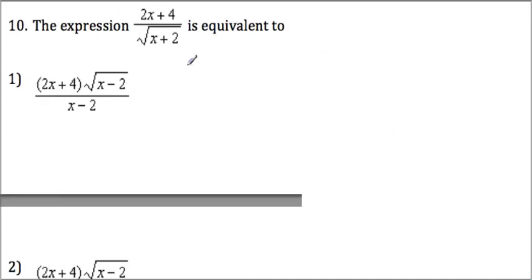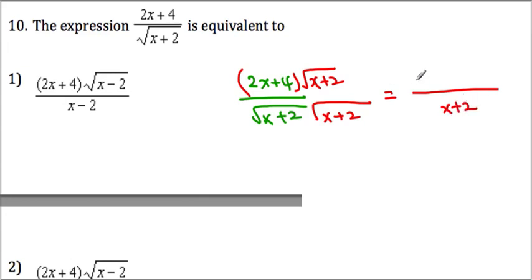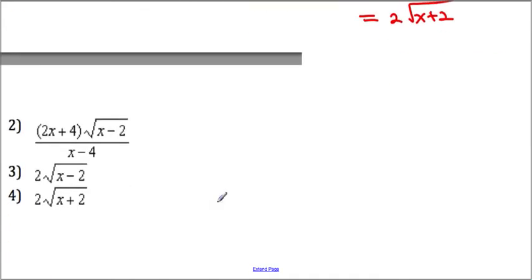Number 10: to rationalize the denominator, multiply top and bottom by radical x plus 2 over radical x plus 2. The denominator becomes x plus 2. In the numerator, we can factor out 2 to get x plus 2 as well. Those cancel out, and our final answer is 2 times the square root of x plus 2 — choice 4.